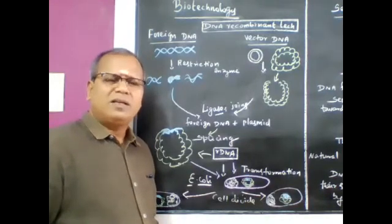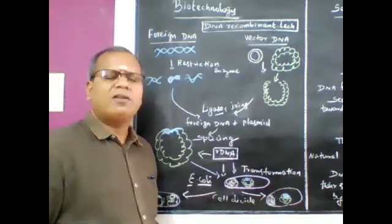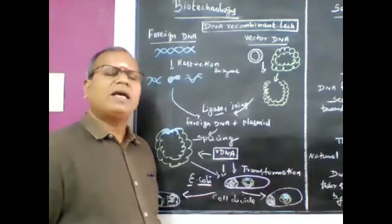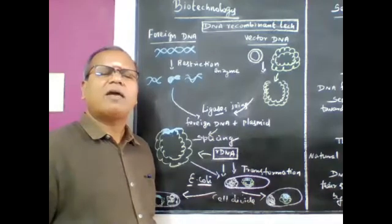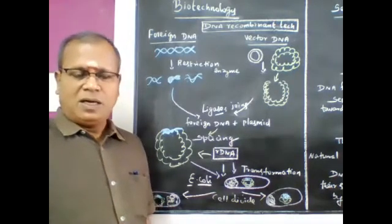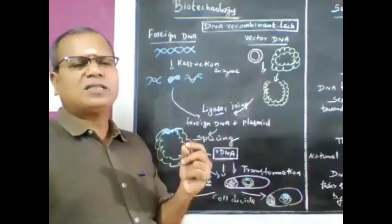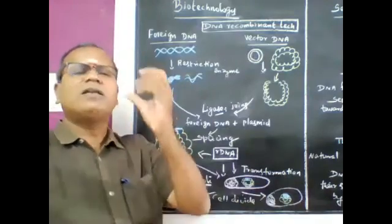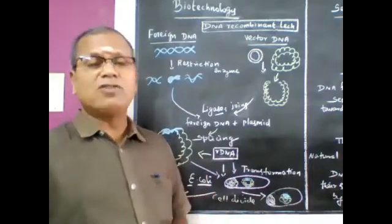The insulin gene is introduced into E. coli. The insulin produced is human insulin. Human insulin obtained from the genetically modified E. coli bacteria is said to be similar to human insulin.